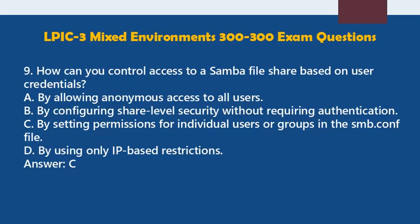Question 9: How can you control access to a Samba file share based on user credentials? A. By allowing anonymous access to all users. B. By configuring share-level security without requiring authentication. C. By setting permissions for individual users or groups in the smb.conf file. D. By using only IP-based restrictions. Answer: C.